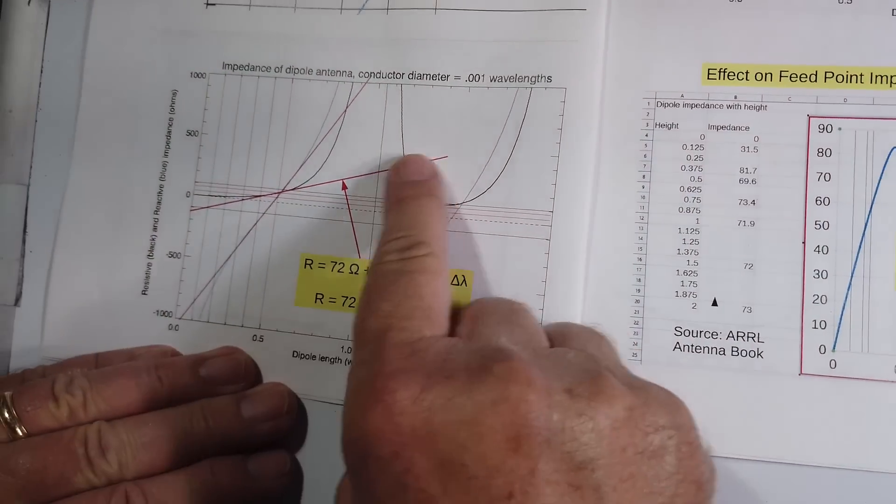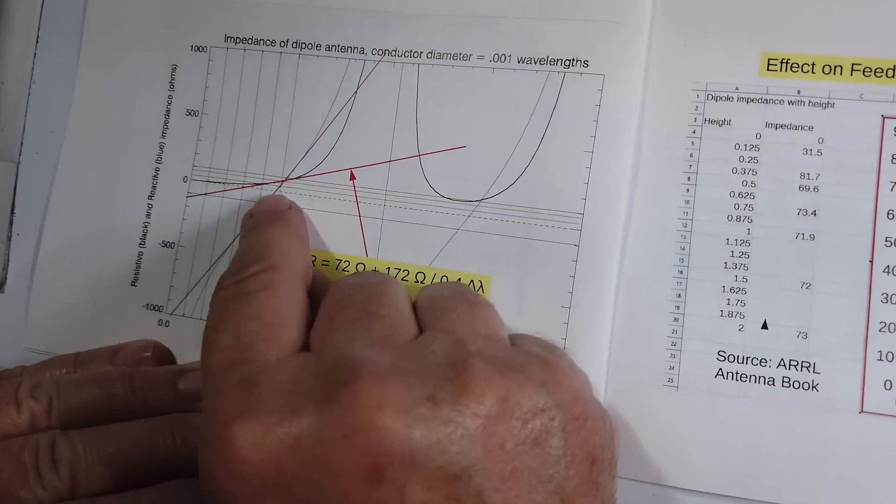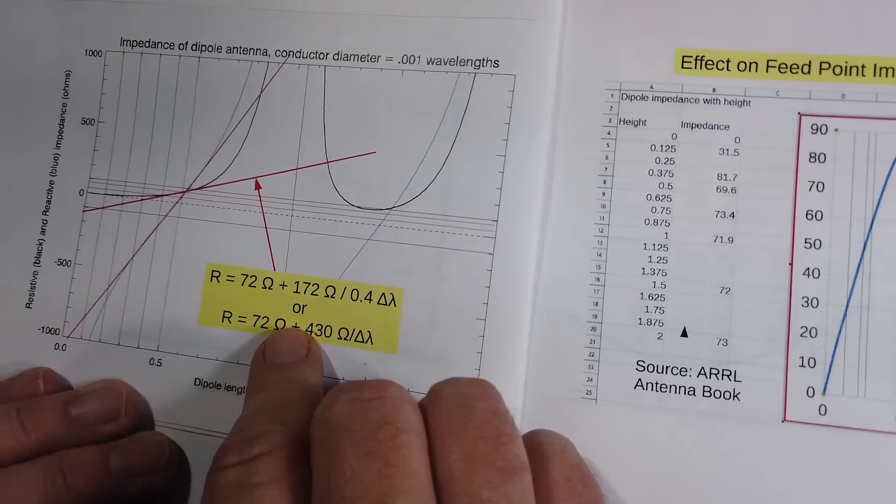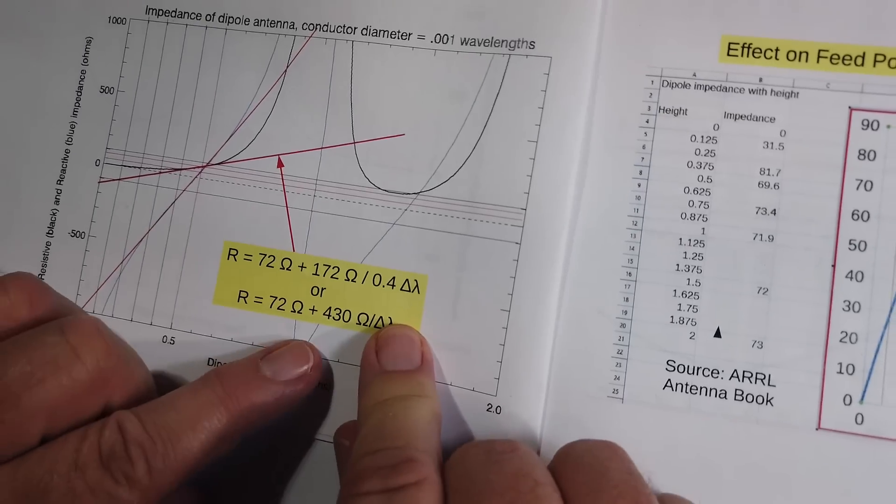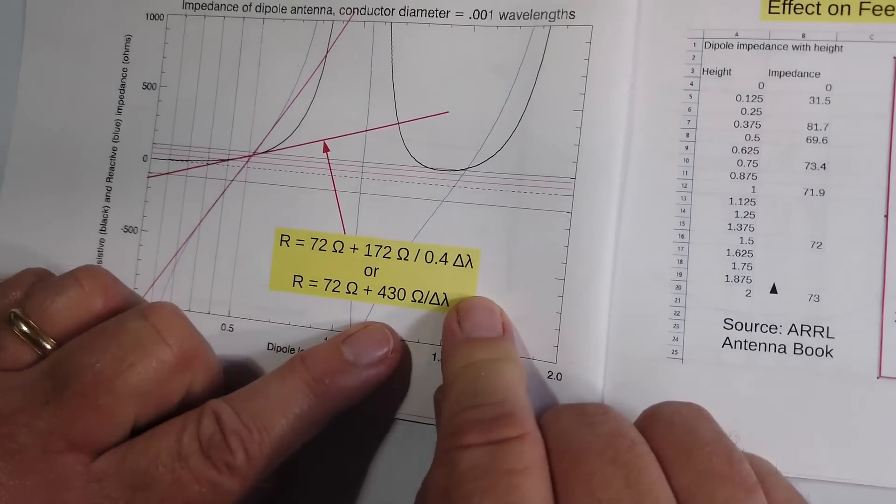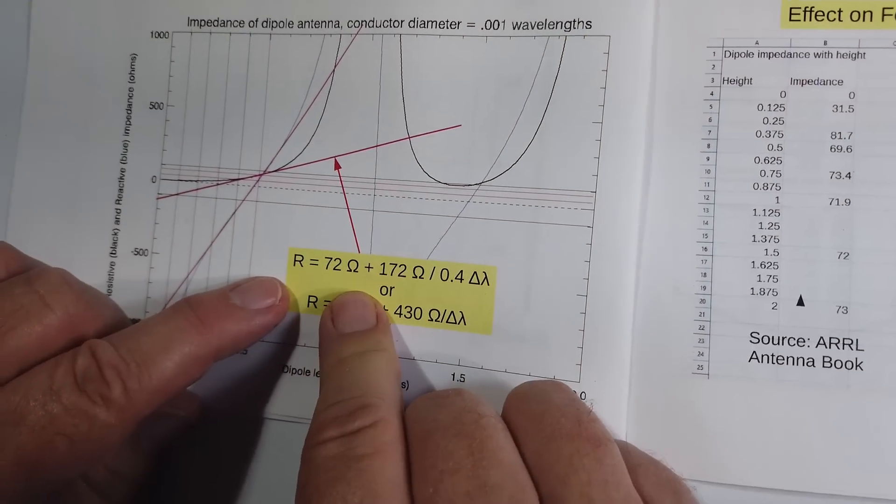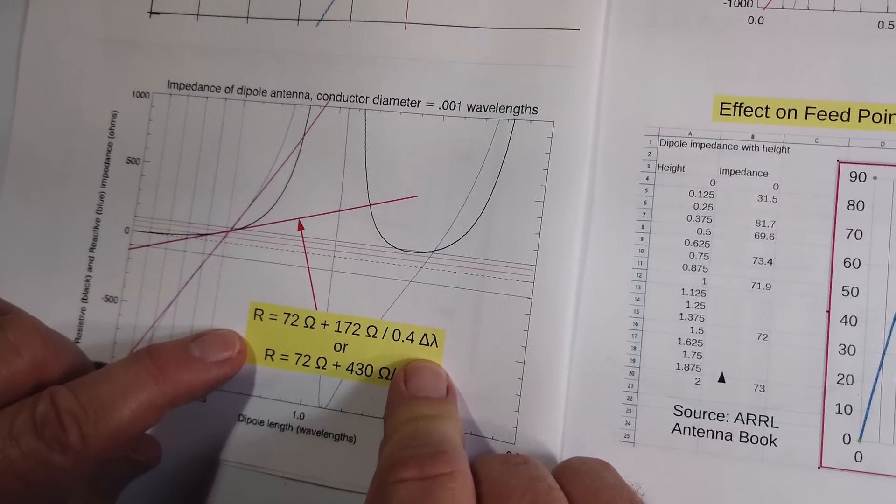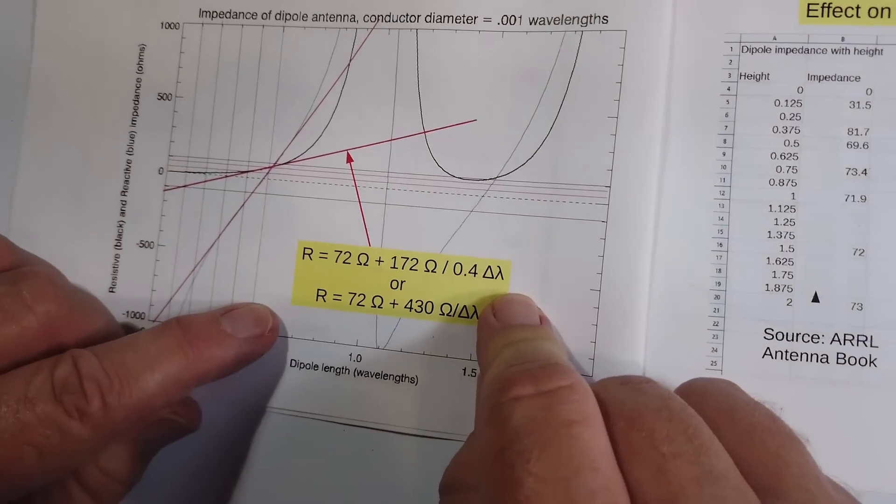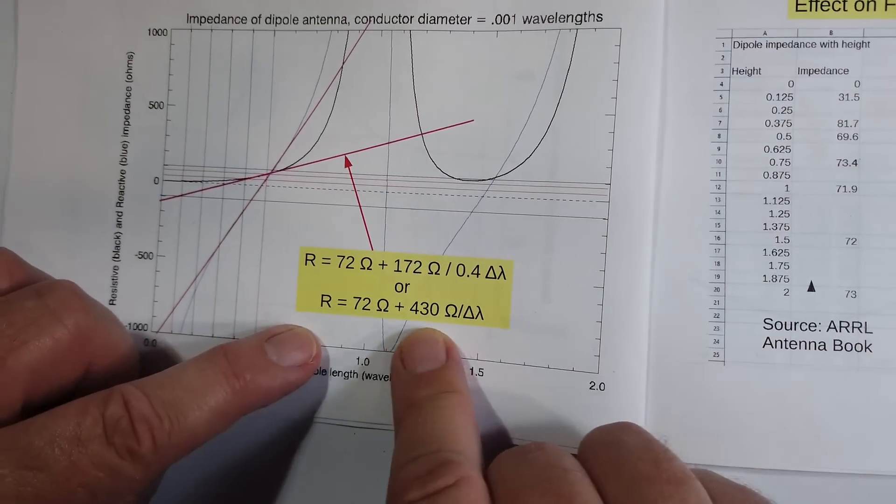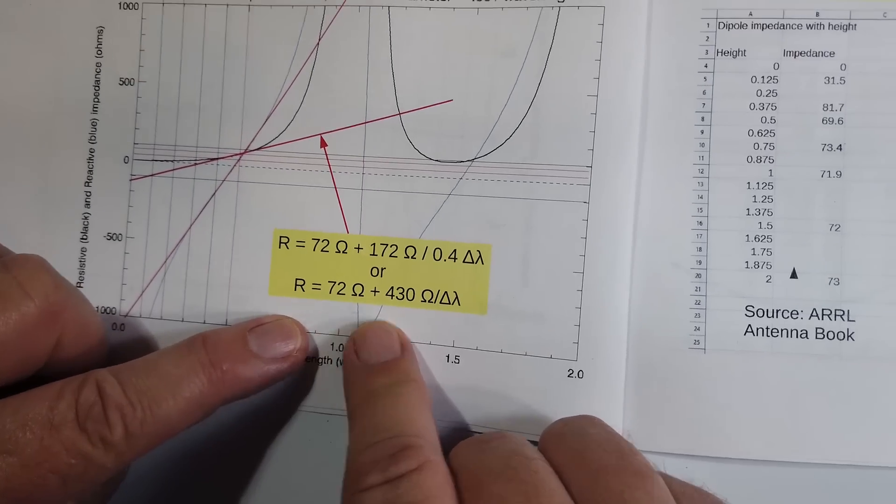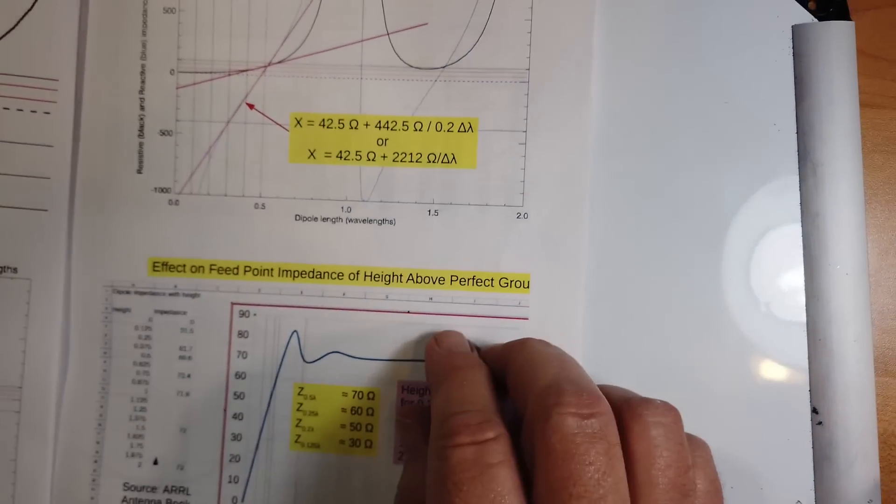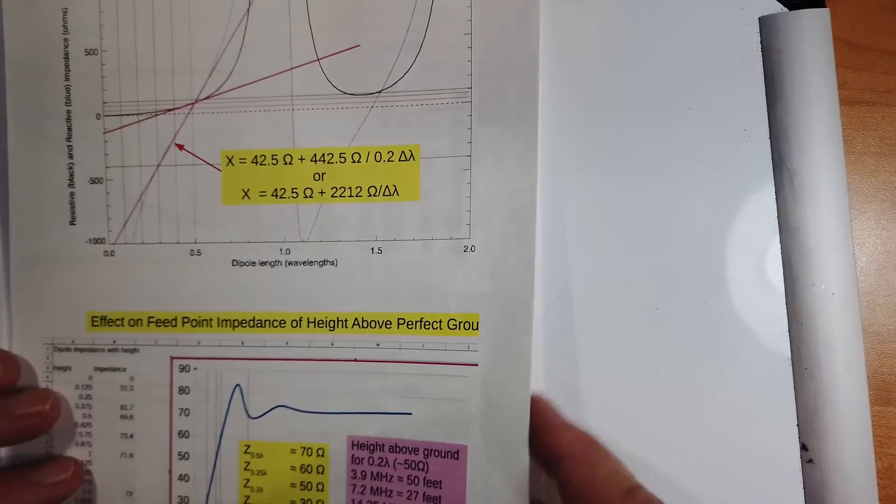When you are tangent to this line, you're at the impedance of 50 ohms, right there, and your reactance is going to be a little different. So your resistance will be 72 ohms plus 172 ohms divided by 0.4. That's the delta lambda. Or we get 72 ohms plus 30 ohms per change in lambda.